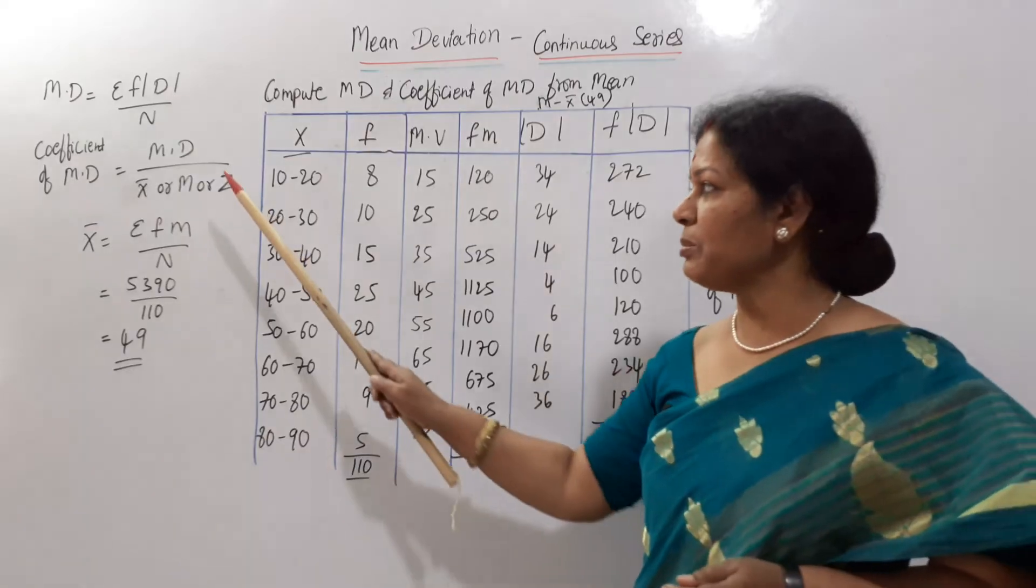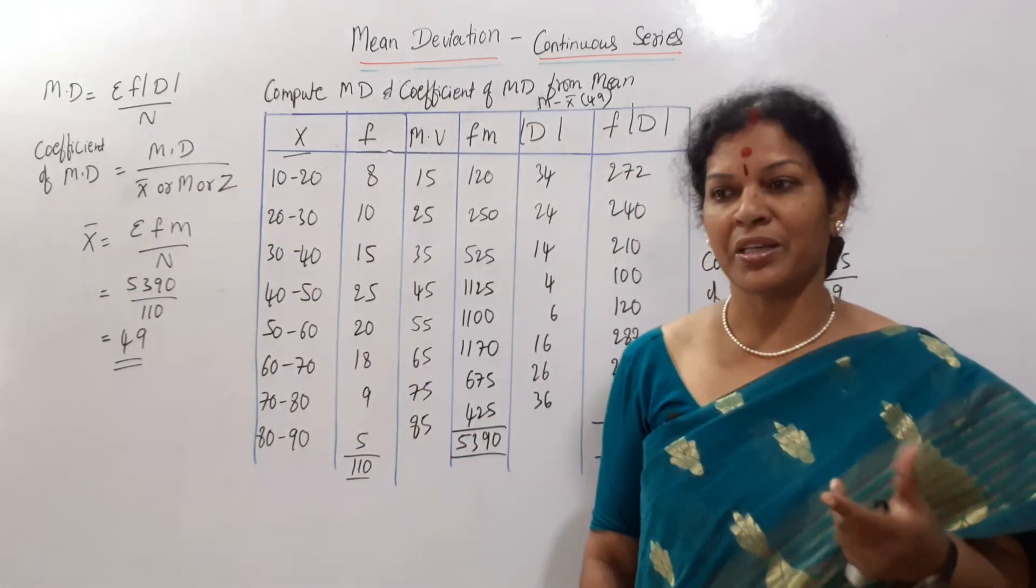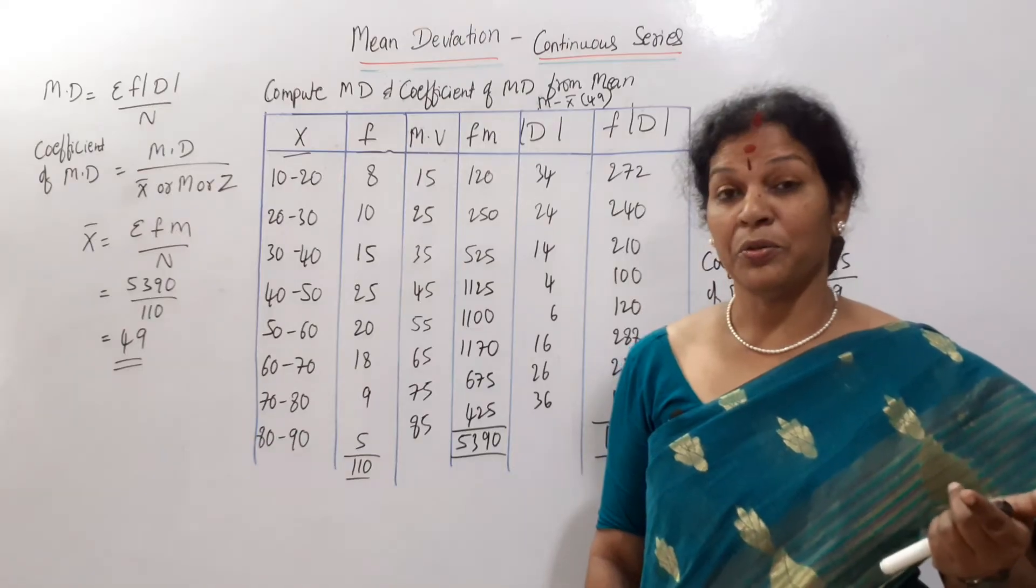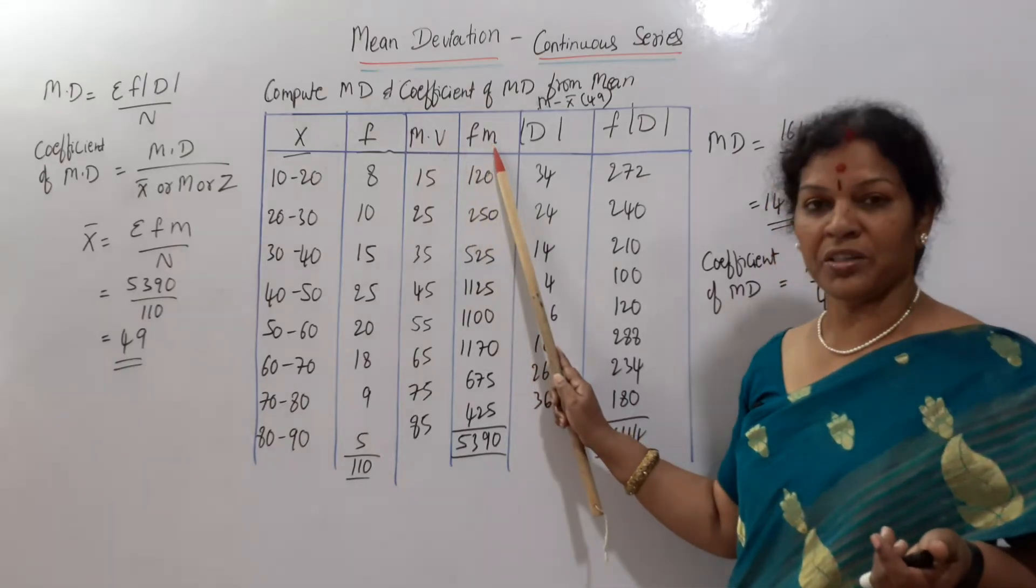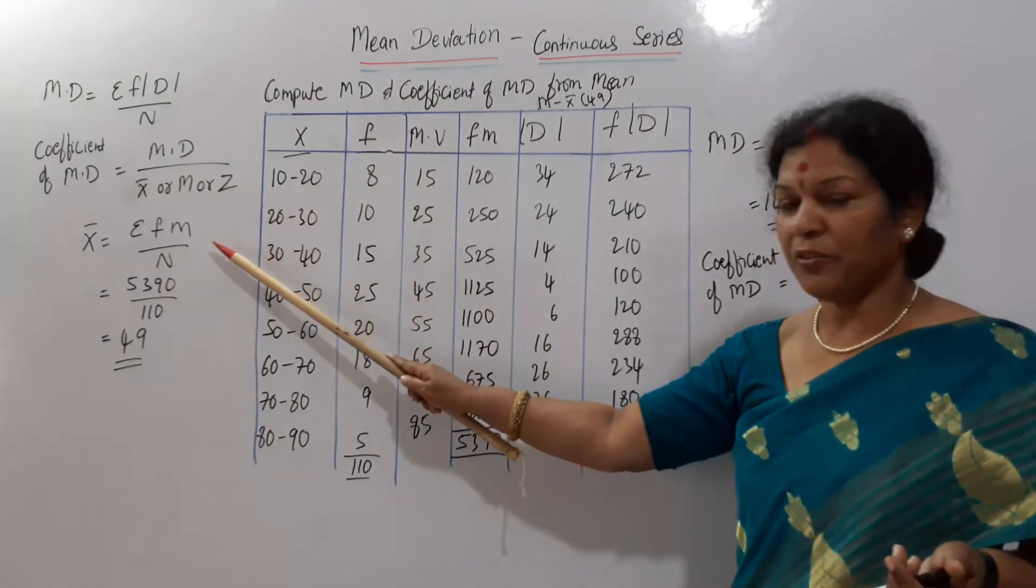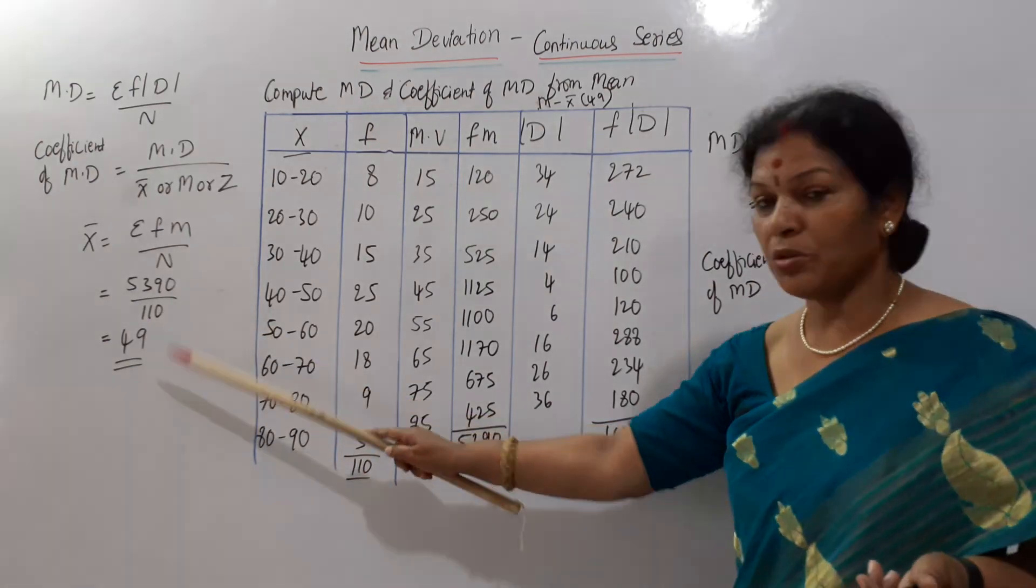Mean we have to calculate. To calculate the mean, first remember the formula, sigma fm by n. How do we get fm? Recollect it. f into m. m means mid value. First calculate mid value. Then f into m. You got it. Then apply in the formula. Sigma fm by n. N is total of frequency. So you got 49.